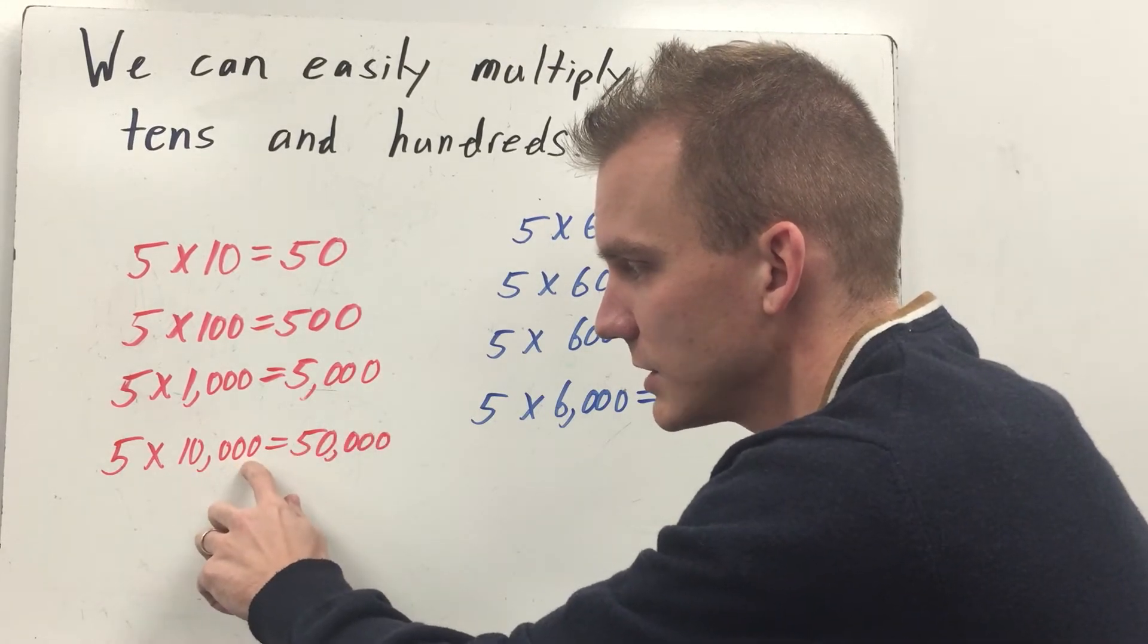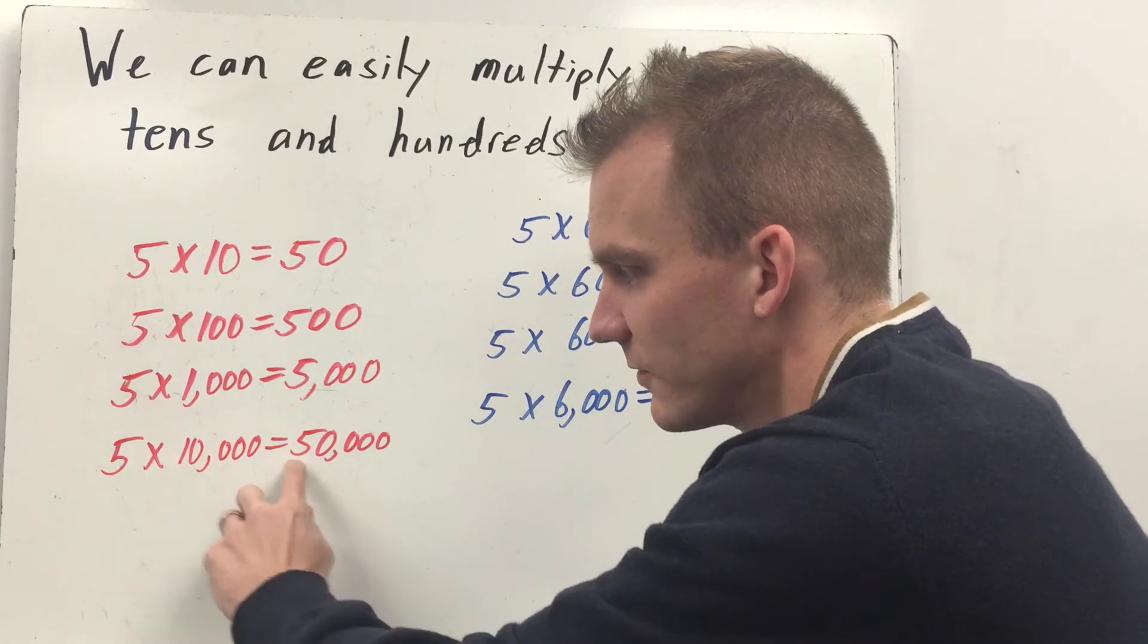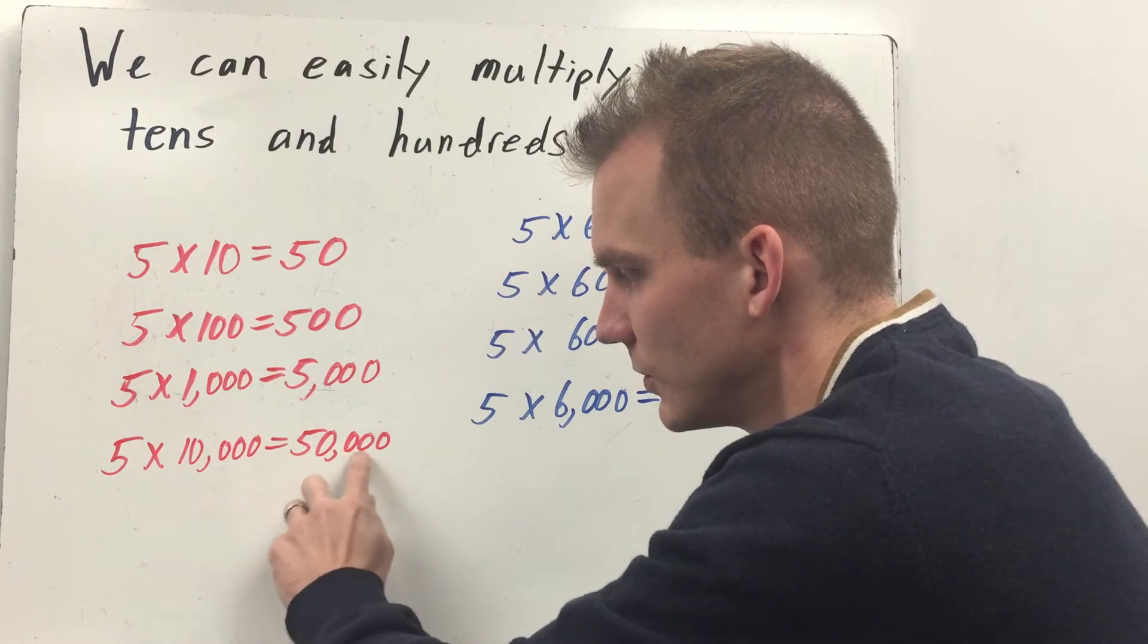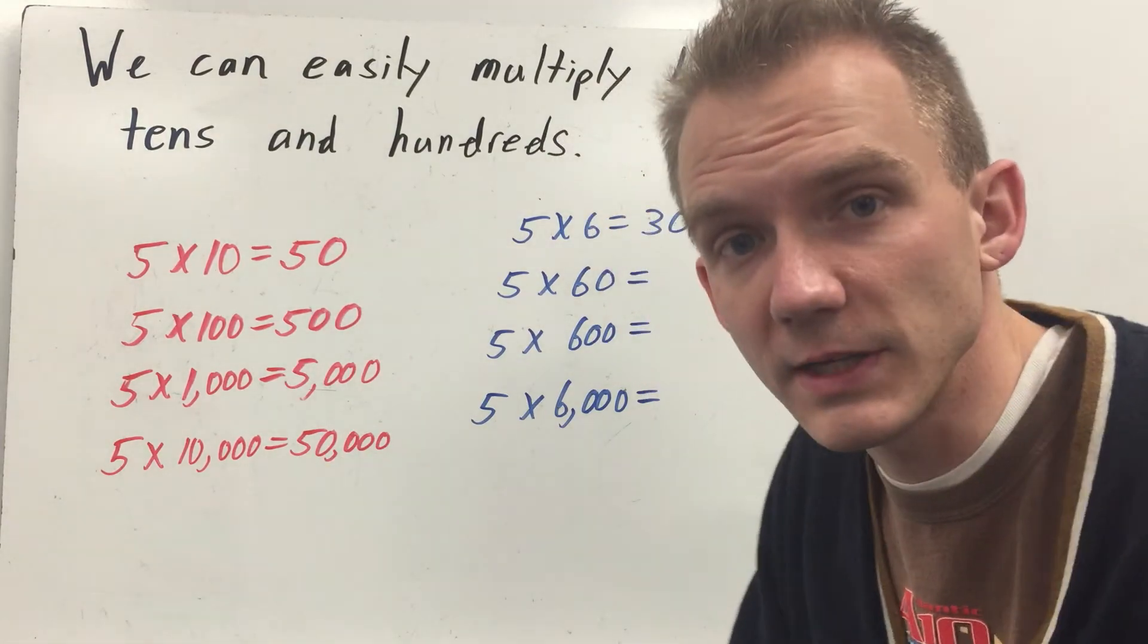Down here I have four zeros. Five times one is five. So then I put four zeros. And my answer is fifty thousand.